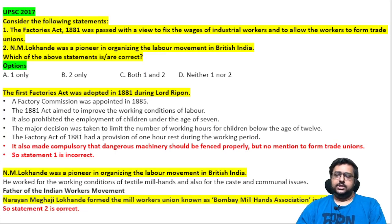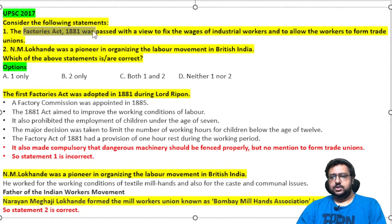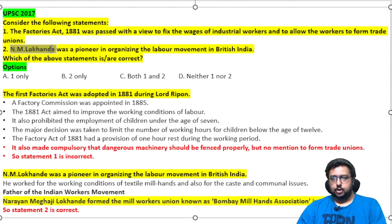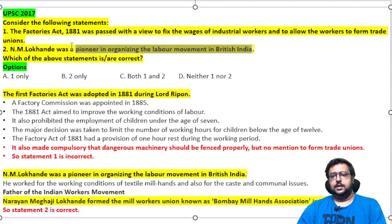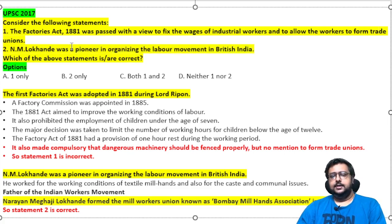This is a slightly difficult static GK question, history related. The Factories Act 1881 — Statement 1: it was passed with a view to fix the wages of industrial workers and to allow the workers to form trade unions. Statement 2: NM Lokhande was a pioneer in organizing the labor movement in British India. Statement 1 is directly given in your Spectrum, but Statement 2 was not directly given.